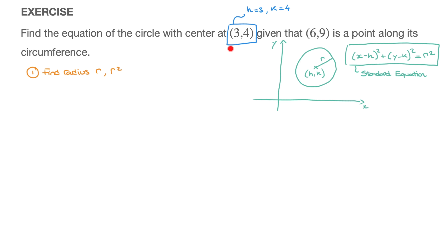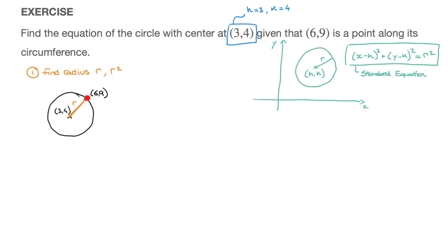Let me draw a circle with center at 3, 4, which passes through a point with coordinates 6, 9. The center is right here with coordinates 3, 4, and it passes through a point along its circumference with coordinates 6, 9. The radius is equal to the distance from the center to the point along the circumference — that orange segment has a length equal to r.